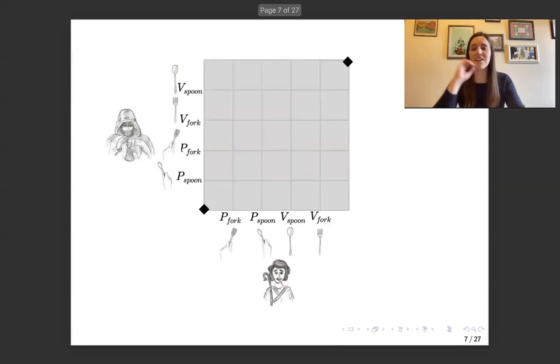And so let us draw a nice geometric model for this game. And so we're going to have this grid and each axis is going to represent what each person is doing. And P is going to stand for pick up and V is going to stand for release. So on the X axis, we have Santiago's actions. He's going to be picking up the fork, the spoon, and then eating and then putting down the spoon and the fork.